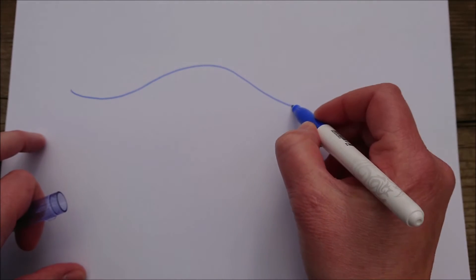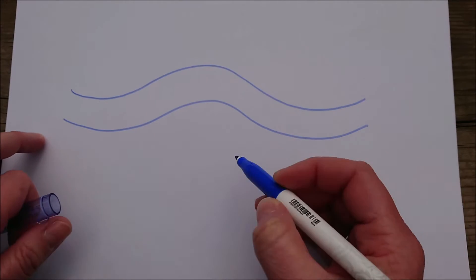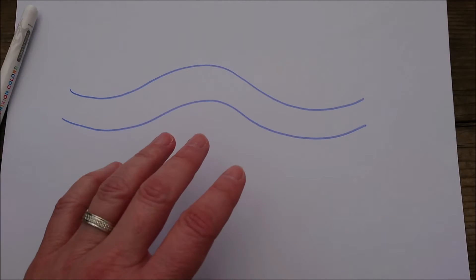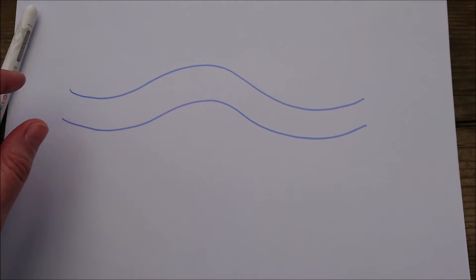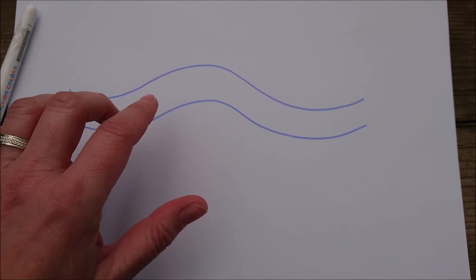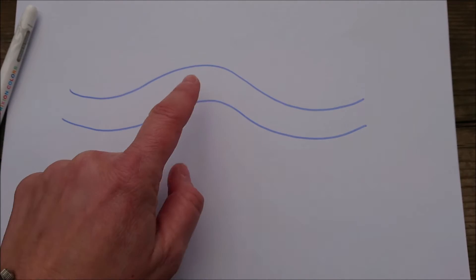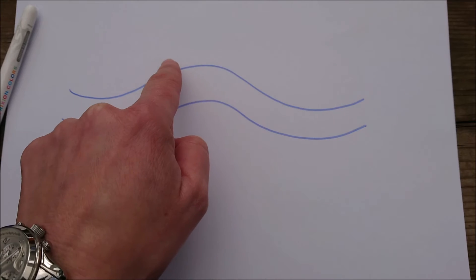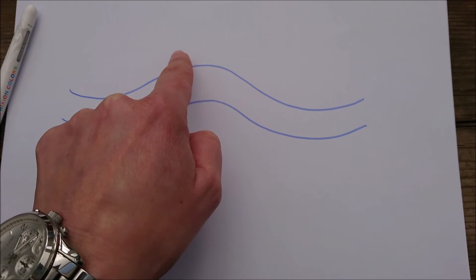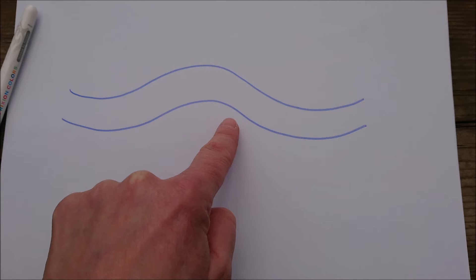Now when you've got a meander in a river, or any bend at all in a river, you're going to get the river changing speed depending on which side of it you are. We'd call this bit the outside bend, and here the flow is going to be much faster than the inside bend, which is here.